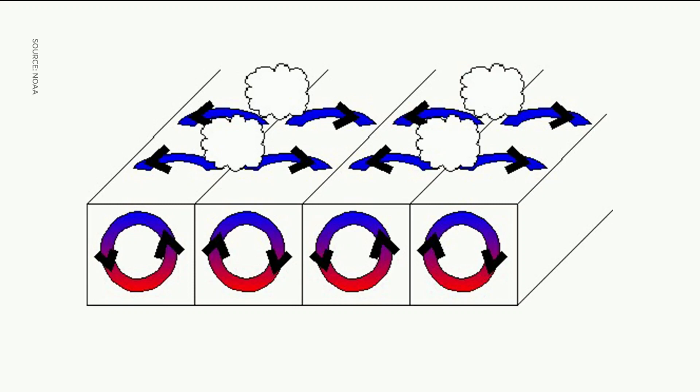You almost get these circular tubes of air that are rotating. When the air rises, you get a cloud forming, and when the air sinks, that's where you see the clear sky in between.